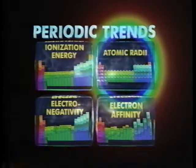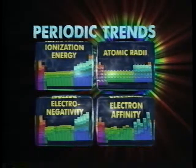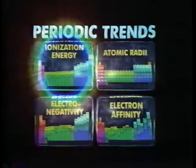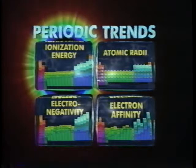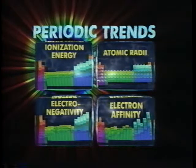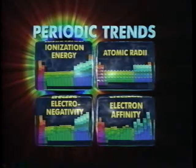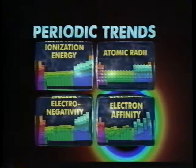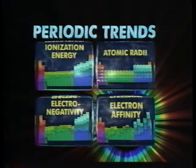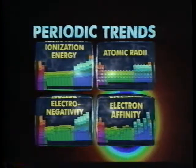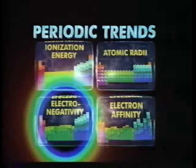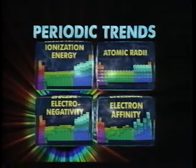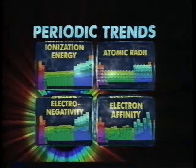We will see that the size of an atom, as measured by its atomic radius, exhibits a periodic trend. The energy needed to remove an electron from an atom, its ionization energy, also exhibits a periodic trend. A third periodic property, the electron affinity, represents the energy gained when an electron is added to an atom. A fourth periodic property, the electronegativity, reflects an atom's tendency to share electrons in a chemical bond.